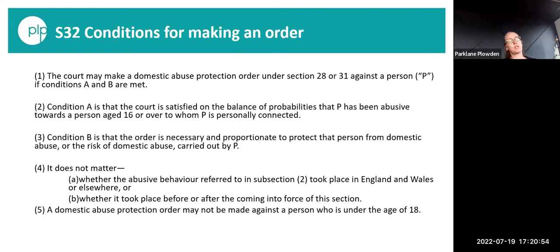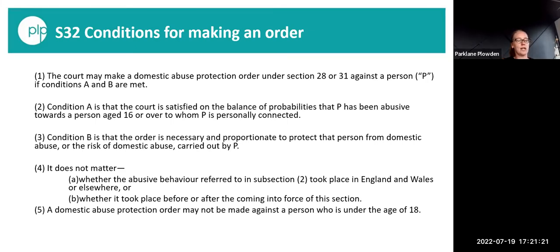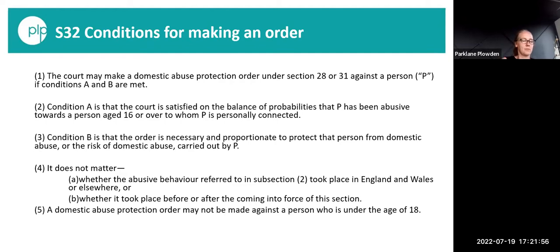In order to get a Domestic Abuse Protection Order, the court has to be satisfied on the balance of probabilities that P has been abusive — using the definition from the first slide — and that the person is aged 16 or over and personally connected. The court also has to be satisfied that such an order is necessary and proportionate to protect the person from domestic abuse or the risk of domestic abuse. It doesn't matter if the abusive behaviour took place in England or Wales — it could have taken place on holiday in Ibiza and still be relevant. It also doesn't matter whether the abuse took place before or after the Act came into force, but it can't be made for anyone under 18.